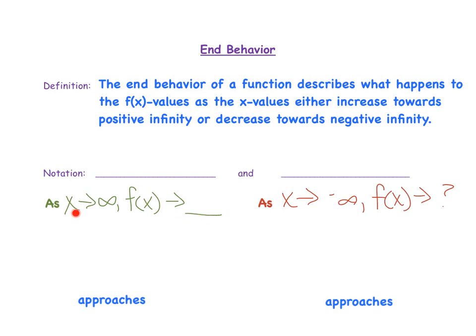Now both of these arrows refer to going towards something or approaching something. I just want you to remember that when you see those arrows, you use the word approaches. As x approaches infinity, f of x approaches positive or negative infinity.